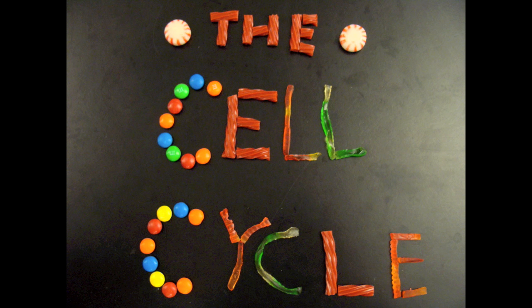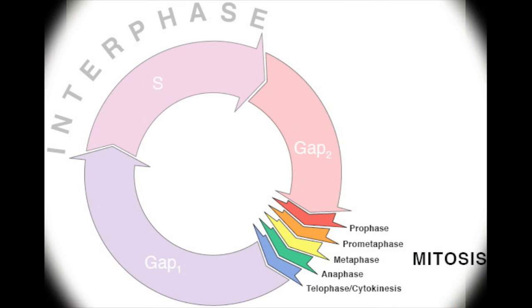Meiosis is the basis for sexual reproduction, so ultimately it is necessary for life to continue. This chart gives an overview of the cell cycle. Interphase, which is the longest stage, encompasses G1, S-phase, and G2. G1 is when the decision to begin cell division is made. In S-phase, DNA is replicated and doubled. The cell prepares for mitosis or meiosis in G2.